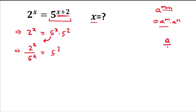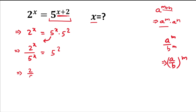Now this is in the form of a divided by b raised to the power m, so we can write it as (a/b)^m. Similarly, we write (2/5)^x and that is equal to 5 squared. For further solution, we'll take log of both sides.